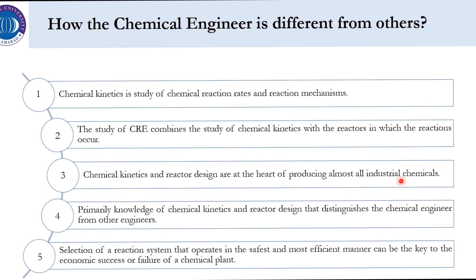Any processing or chemical industry is incomplete without the reaction system. In a chemical process, the reactor is the core — the heart — of that plant. Knowledge of chemical kinetics and reactor design distinguishes chemical engineers from other engineers. We must select a system that operates in the safest and most efficient manner, which can lead to economic success — or, if not, to the failure of a chemical plant.